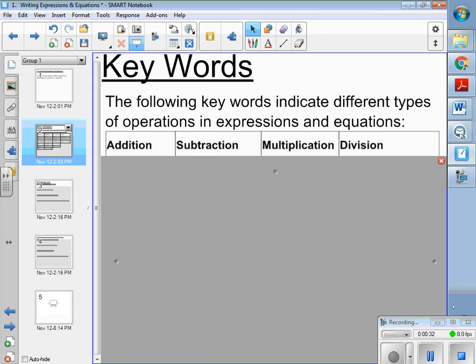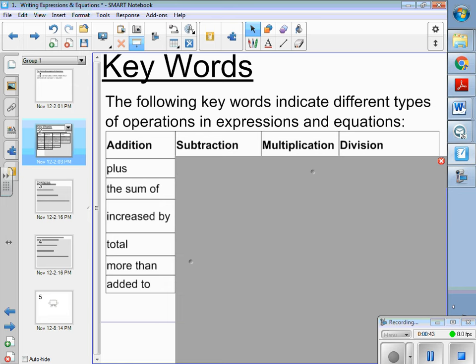I'm going to read through the list by column. You need to pause it to write it, okay? You guys wouldn't want me to take the time to go that slow. So for addition, we have plus, the sum of, increased by, total, more than, and added to.